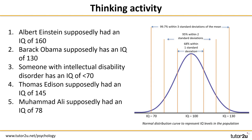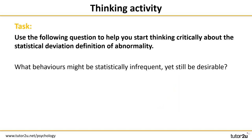The one example you may want to refer to in your work on statistical infrequency is intellectual disability disorder, because it's a specific disorder that allows you to explain what exactly is meant by rare or statistically infrequent behaviour. Here's another quick thinking activity — on your own or with a partner, think about this question and jot your ideas on your paper: what behaviours might be statistically infrequent yet still be desirable? Pause this video for two minutes.